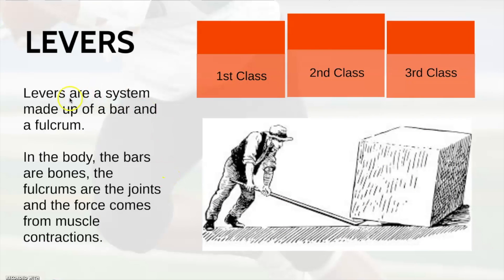Levers are a system made up of a bar and a fulcrum. Within biomechanics and relating to the body, the bars are the bones, the fulcrum are the joints, and the force comes from muscle contractions.